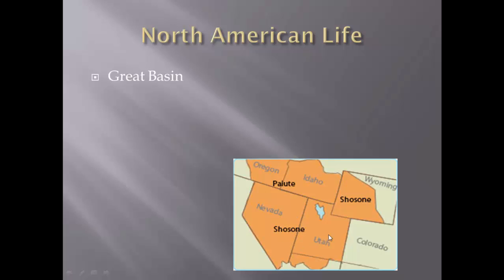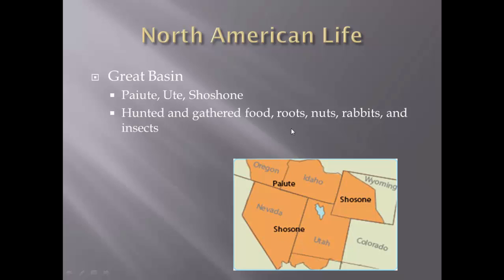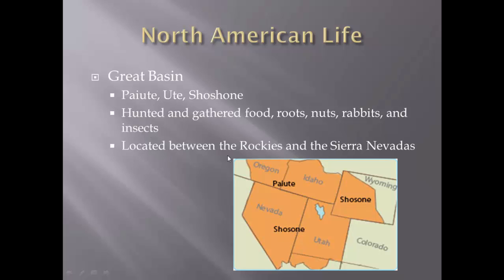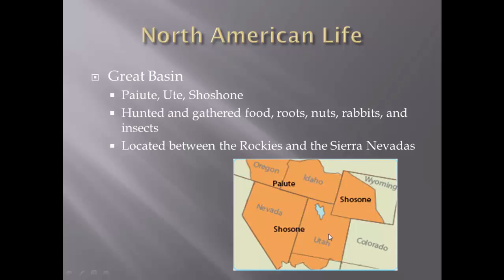In the Great Basin region, around Utah, it's very dry. The few Native American groups there — the Shoshone being probably the largest — hunted, gathered food, ate roots and nuts, basically whatever they could. The common theme is they catered to the geography. Geography dictates what you can and can't do. The Great Basin is located between the Rocky Mountains and the Sierra Nevada Mountains.